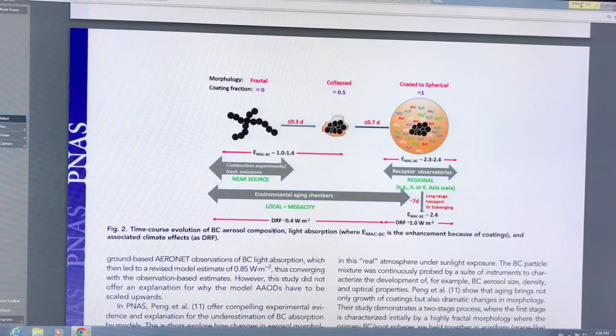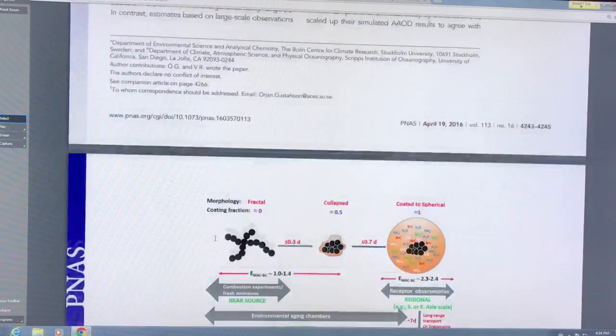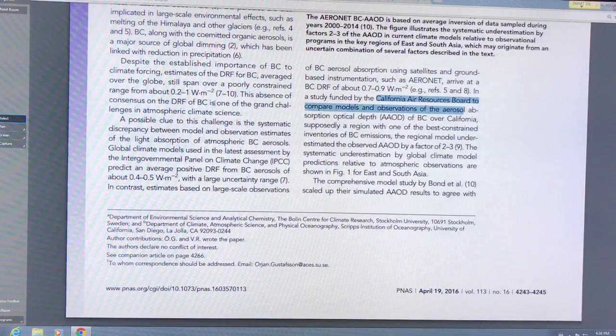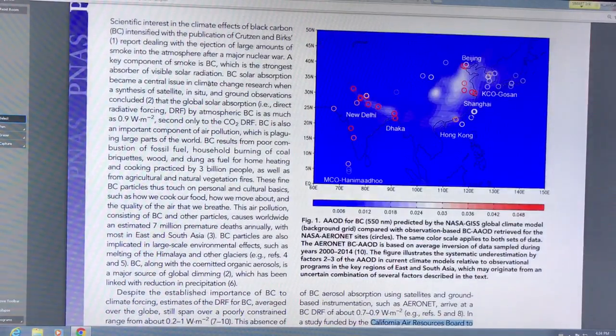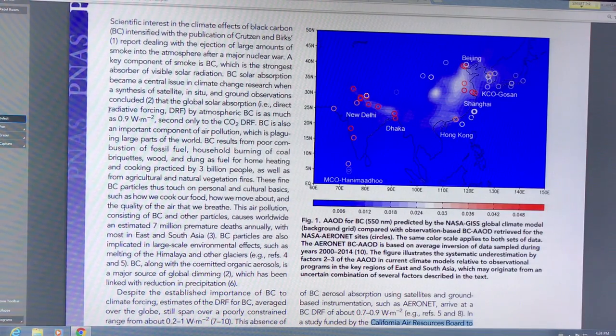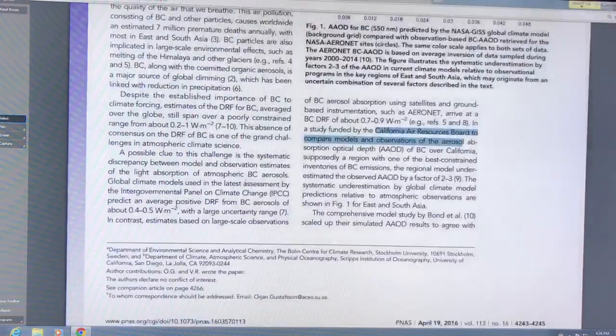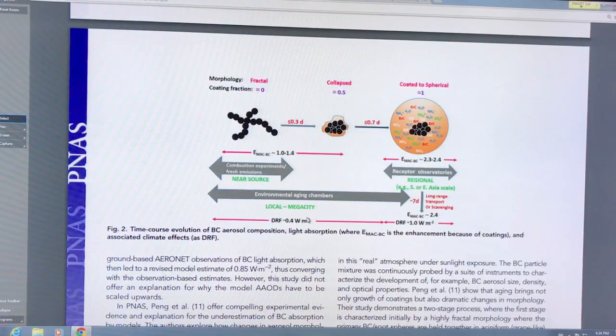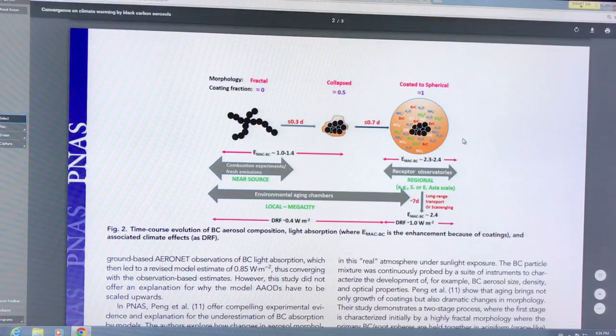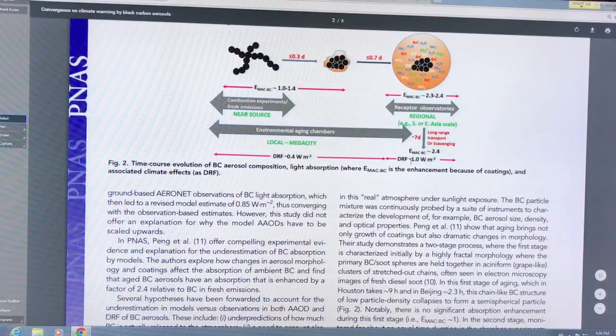This is the climate effect. The DRF - direct radiative forcing effect - is about 0.4 watts per square meter in this particular state. But then over time, as it moves and is transported and coated, it's closer to 1 watt per square meter. This is part of the reason why the range is so wide, depending on where you measure it. The effect is very strong, second only to CO2.